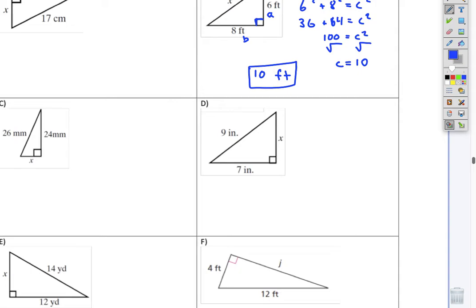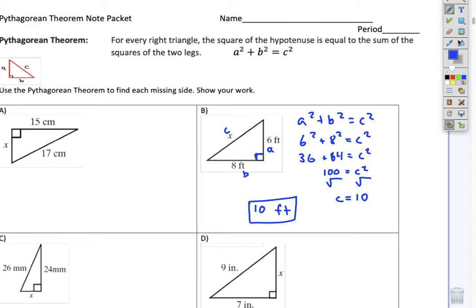Okay. All of the rest of these, we're given one leg and the hypotenuse, and we're trying to solve for the other leg. So look at A. In example A, we know that this length is 15, and this length is 17. This one is the hypotenuse because it's across from the right angle. This one is a leg because it makes the right angle.